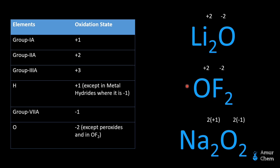The next one is oxygen. Oxygen exists in negative 2, negative 1, and positive 2 oxidation states. For example, in Li2O, the oxidation state of oxygen is negative 2. Lithium belongs to Group 1A and has an oxidation state of positive 1; there are two lithium atoms, giving a total positive 2 charge, so oxygen acquires a negative 2 charge to balance the molecule.